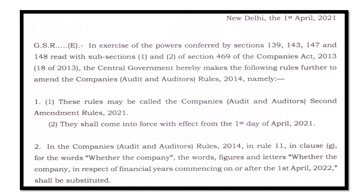When the amendment came, it was the second amendment — the Companies Audit and Auditors Second Amendment Rules 2021. It was to be enforced from 1st April 2021, but that will also now change. In Rule 11 clause G, which is related to the accounting software requirement, the text talks about whether the company — in respect of financial years commencing on or after the 1st day of April 2022 — has used such accounting software for maintaining its books of accounts.